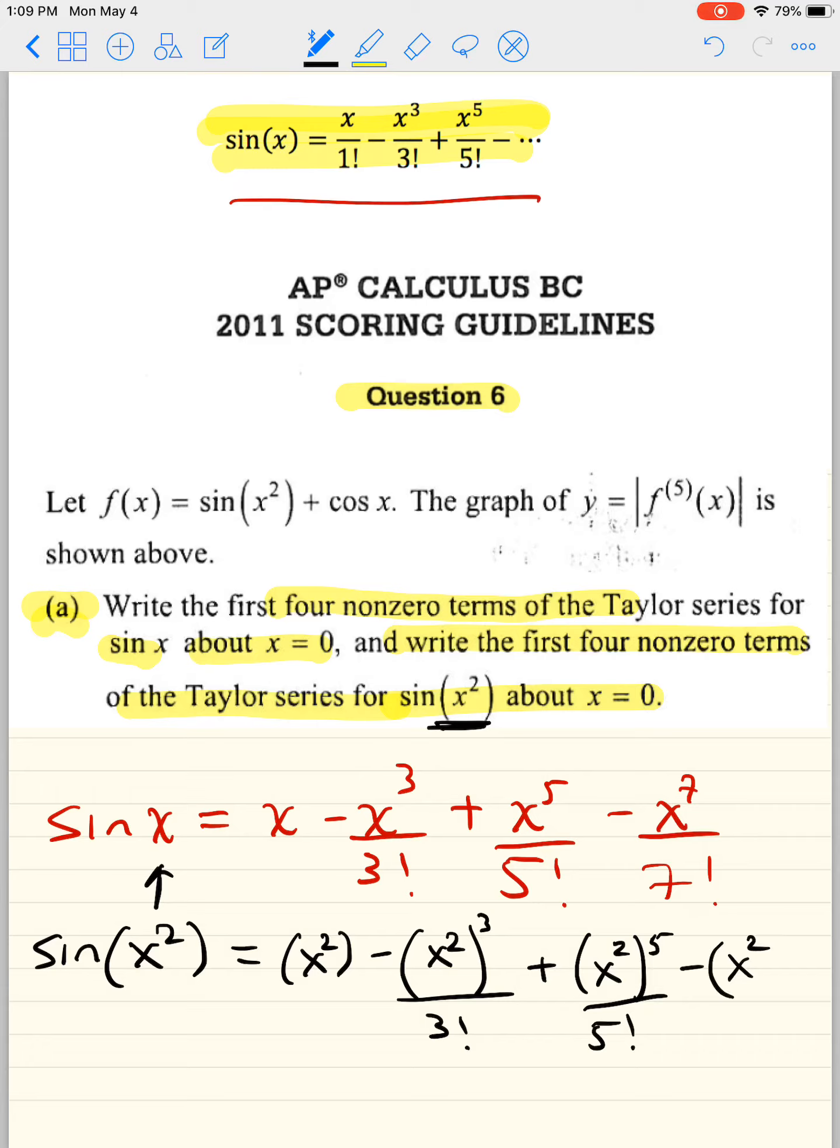And finally, x squared. Take your time and make sure you do it right. Remember that a power to a power you multiply. So you get x squared minus x to the sixth over 3 factorial plus x to the 10th over 5 factorial.